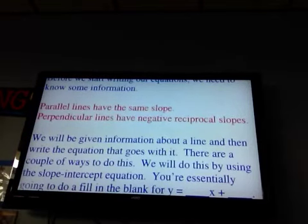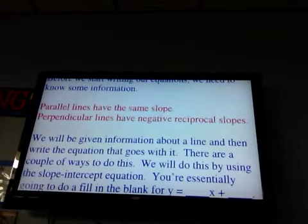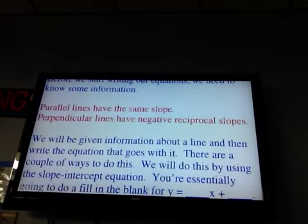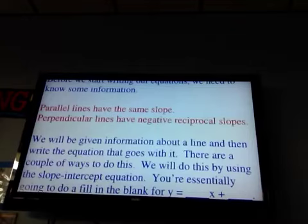So if a line has a slope of two-thirds, then the line parallel to it has a slope of two-thirds. Good. You know what the word same means.